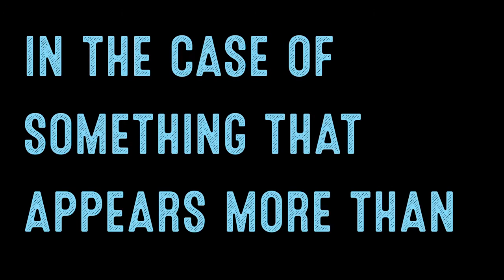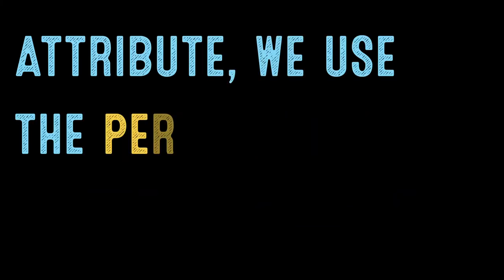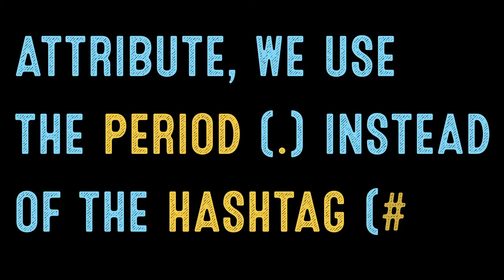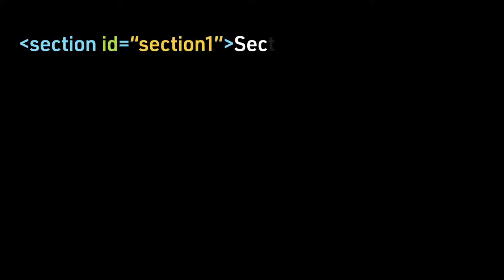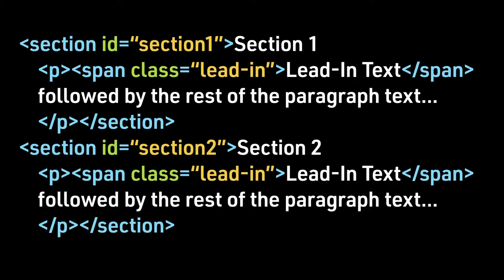In the case of something that appears more than once, we use the class attribute. To target a class attribute, we use the period instead of the hashtag.